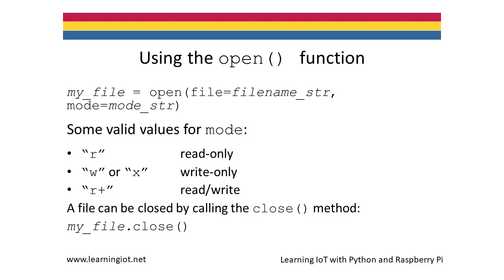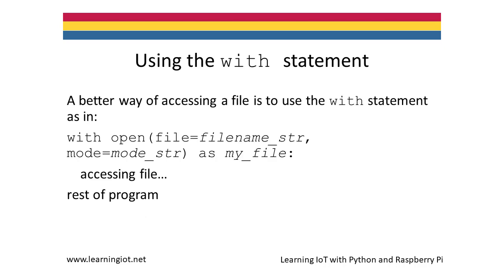A file should always be closed when access is no longer needed. The close method can be called on the file object in order to close the file. A better way of opening a file, however, is by using the with statement — that is, with open, the name of the file, followed by the mode, as my_file. Then the close method does not need to be explicitly called on the file object. The file will be closed even if an exception is not properly handled.